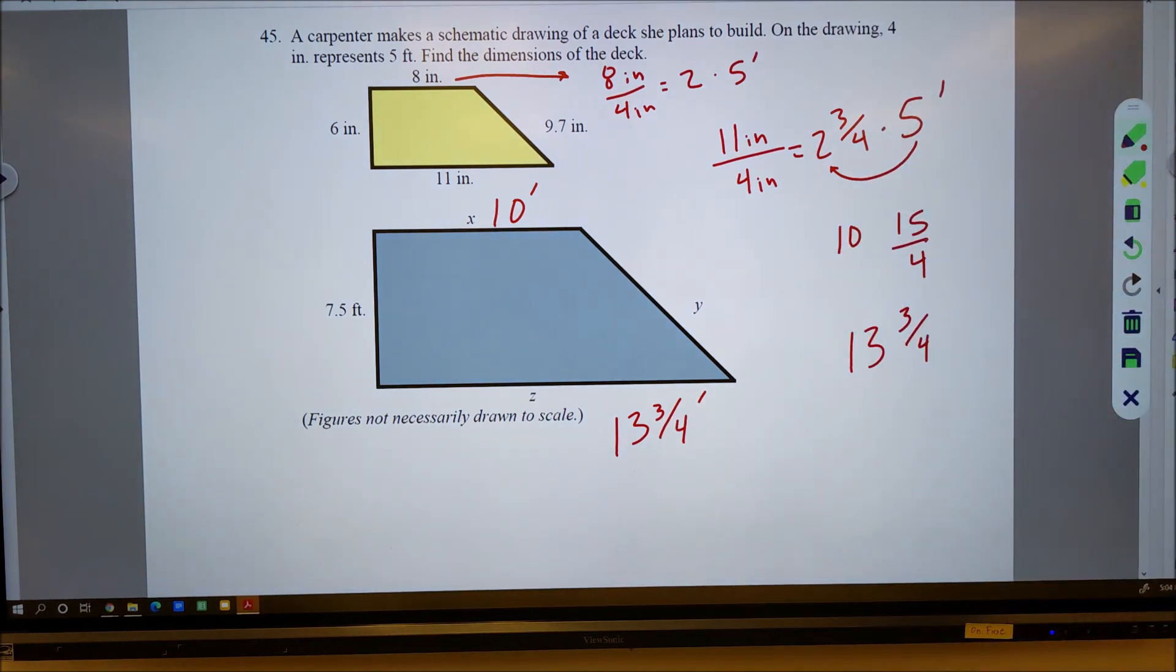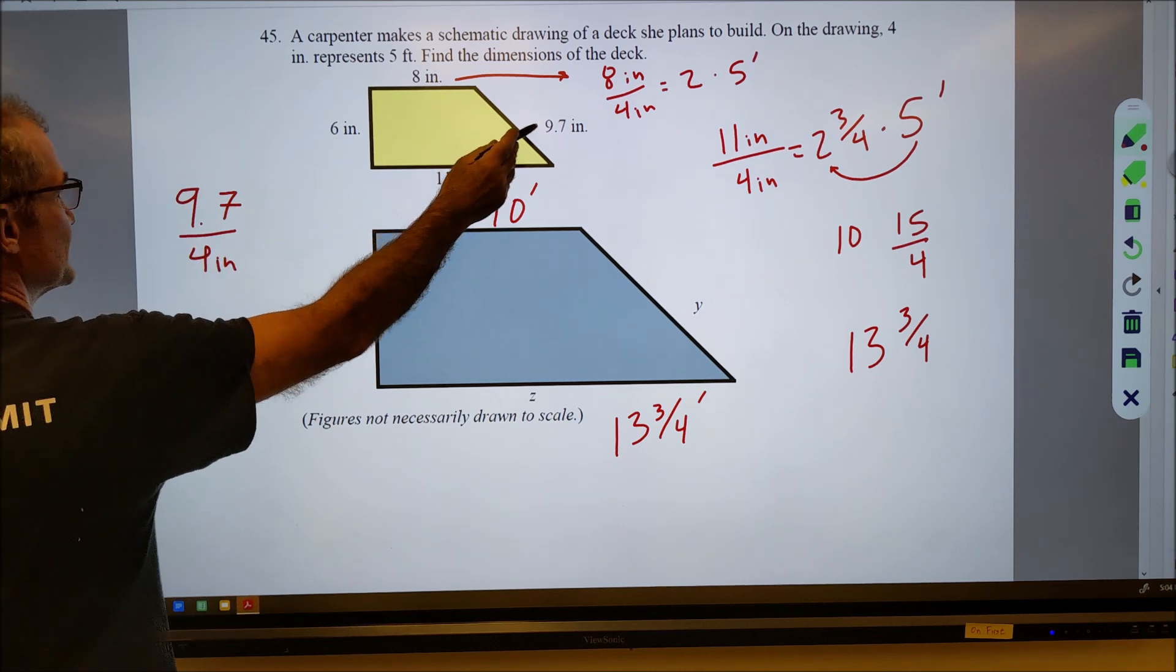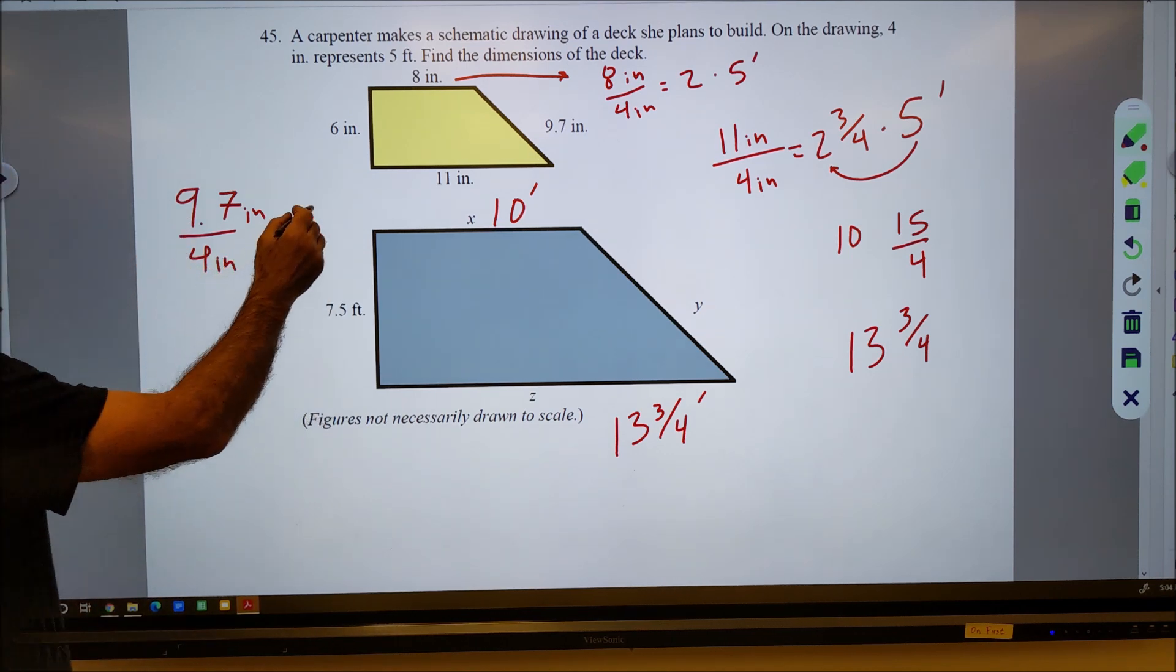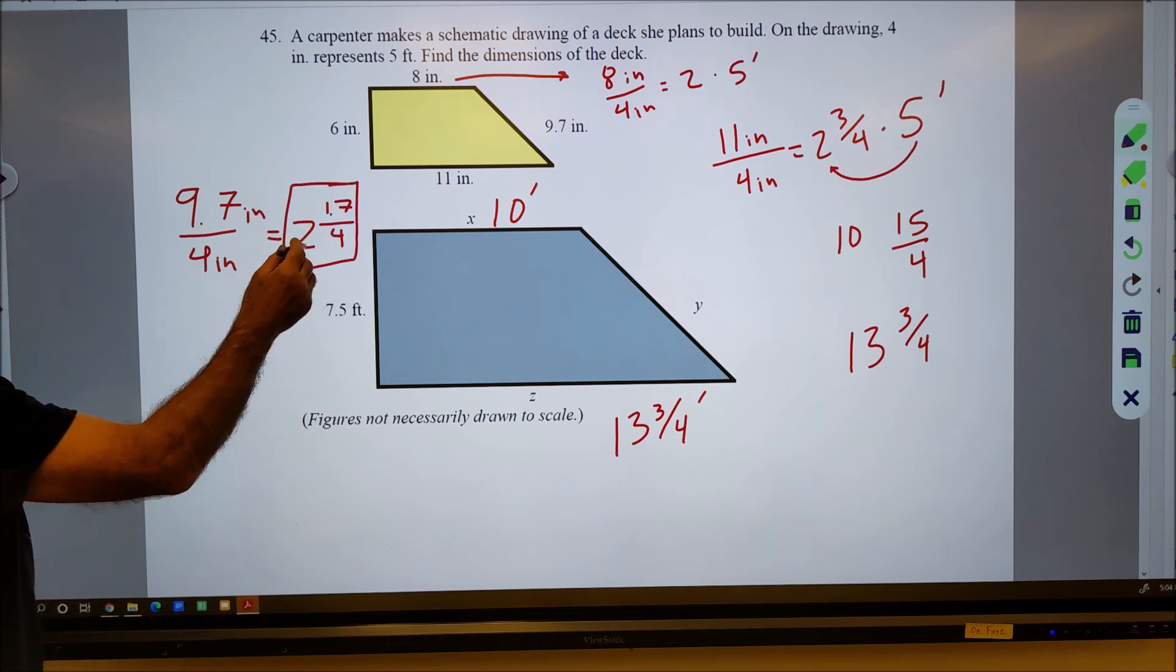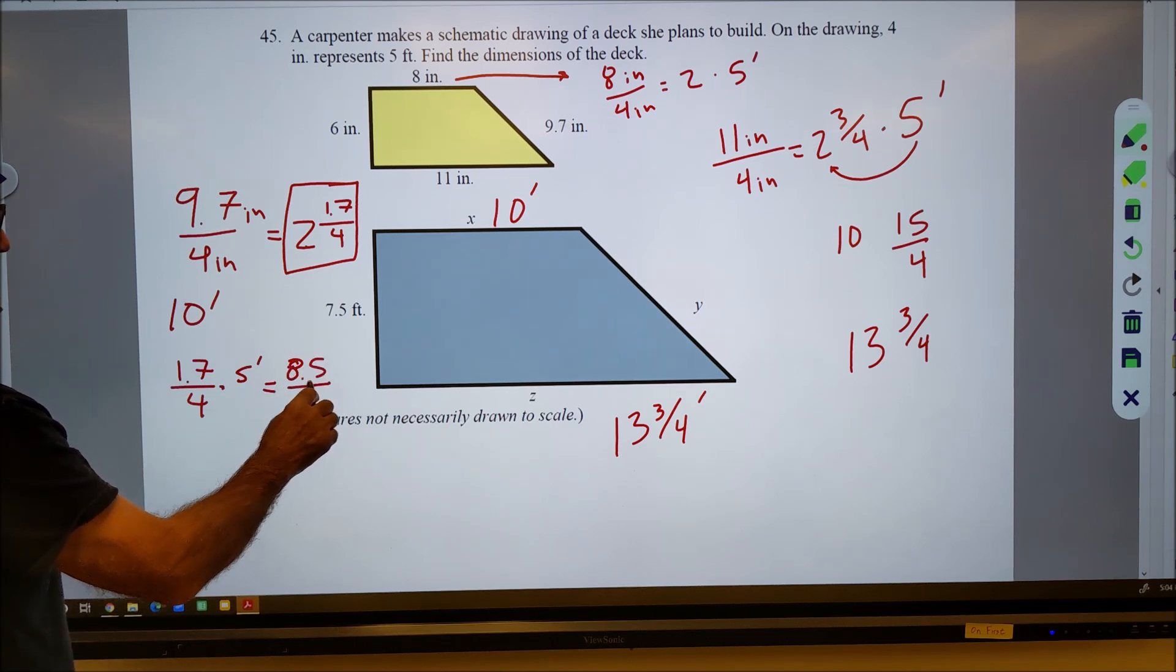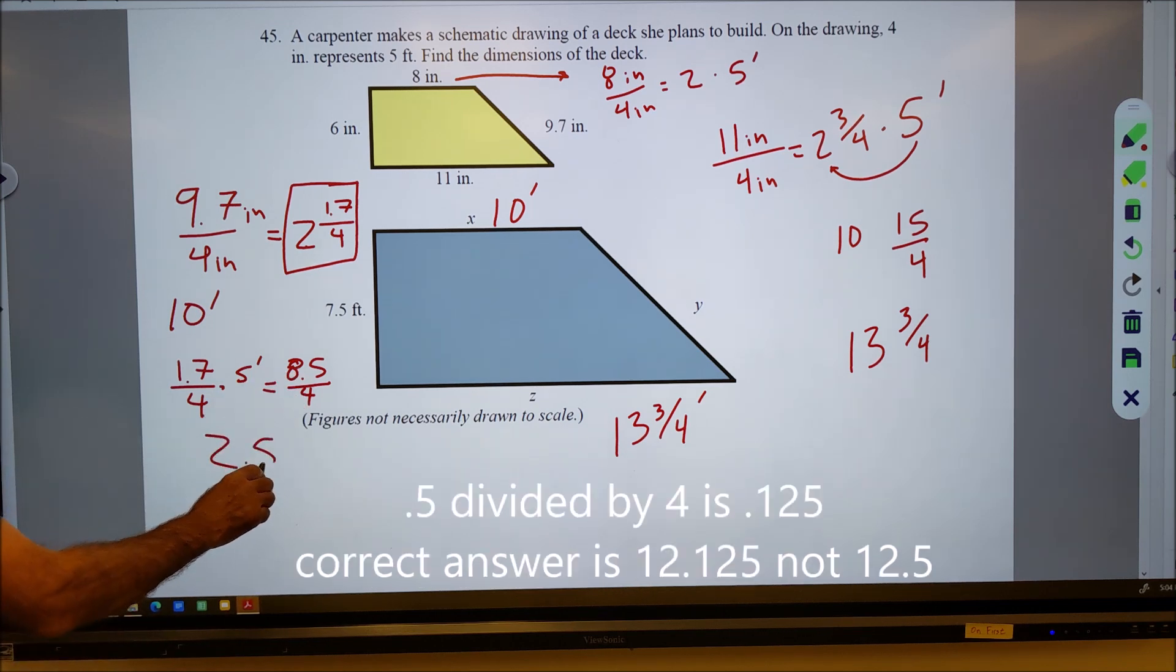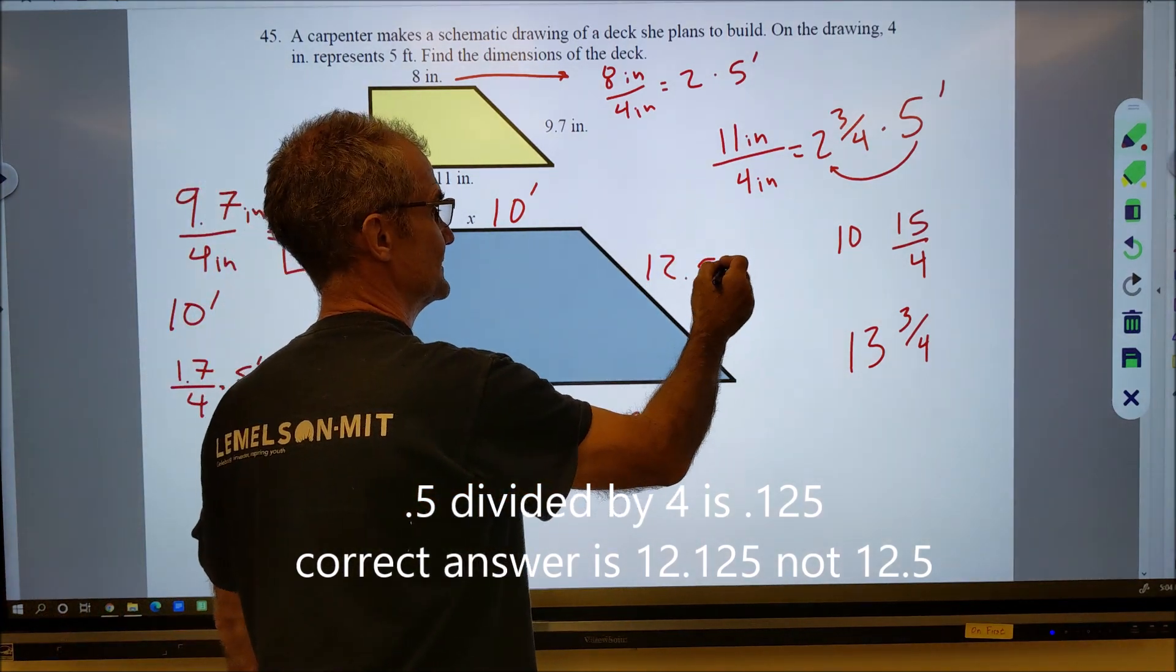Lastly, I have that 9.7 inches. So 9.7 divided by the 4 inches. So I have 9.7 inches divided by the 4 inches, it's going to go in there 2 times. That's going to give me 8 with 1.7 left over. Then I'm going to multiply this by the 5 feet. So 2 times 5 feet is 10 feet. Then 1.7 over 4 times the 5 feet, it's going to give me 8.5 over 4. 4 will go in there 2 times, leaving me with 0.5. Then I have that 2.5 feet and that 10 feet to get 12.5 feet.